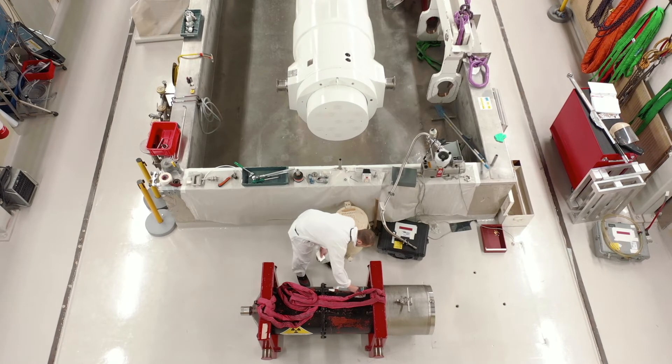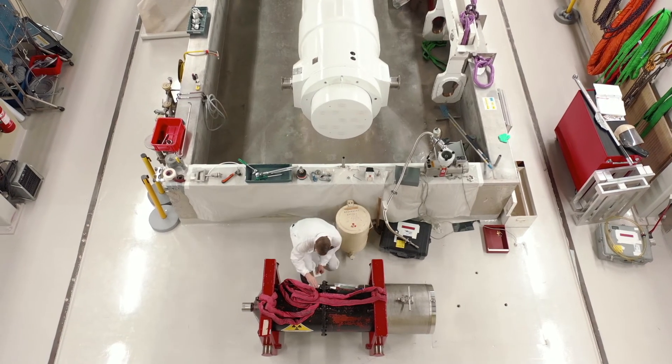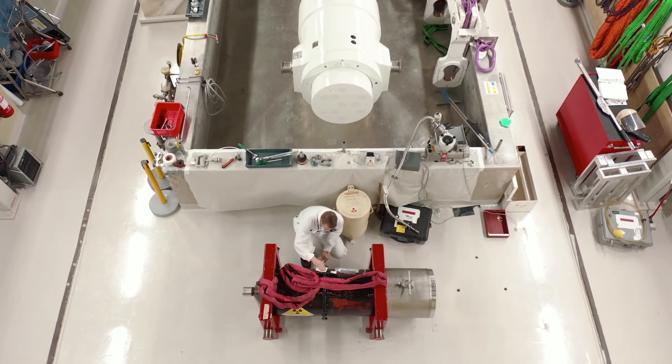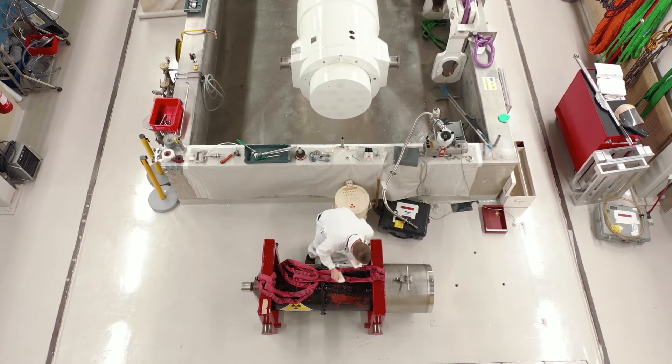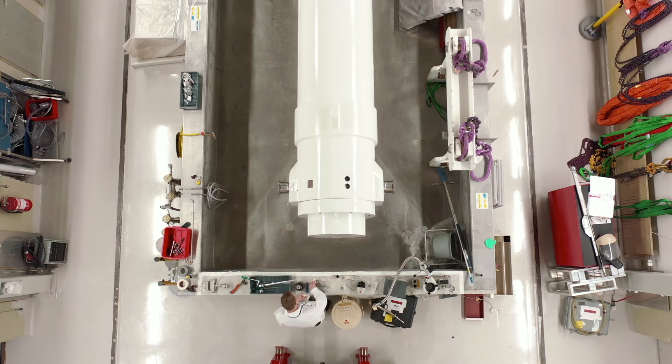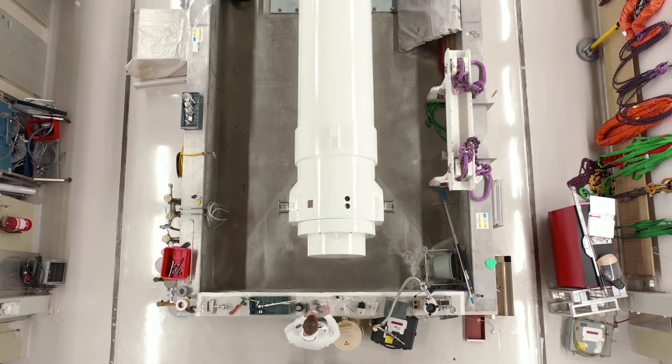We are now entering Studsvik Nuclear's facility for storage and handling of fuel and highly irradiated materials. This is a Type A transport cask weighing 29 tons.